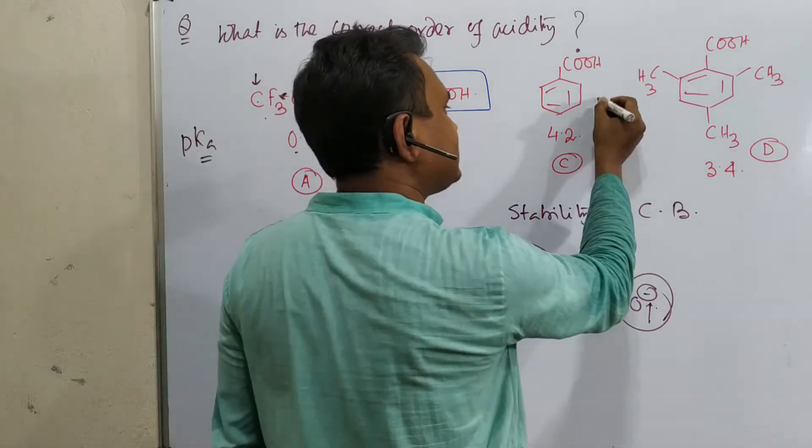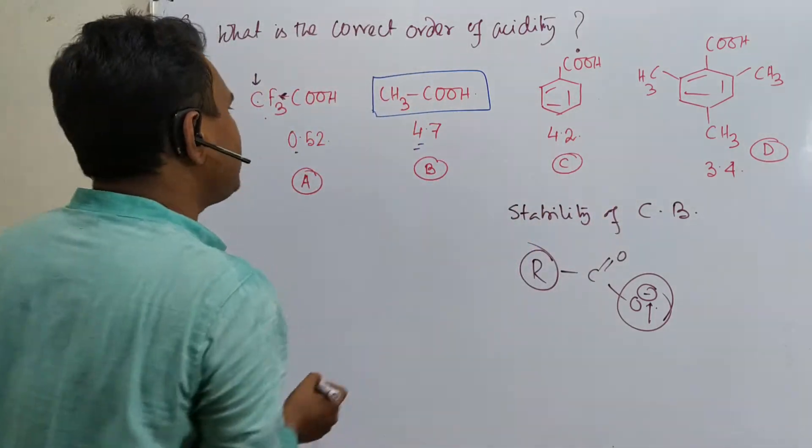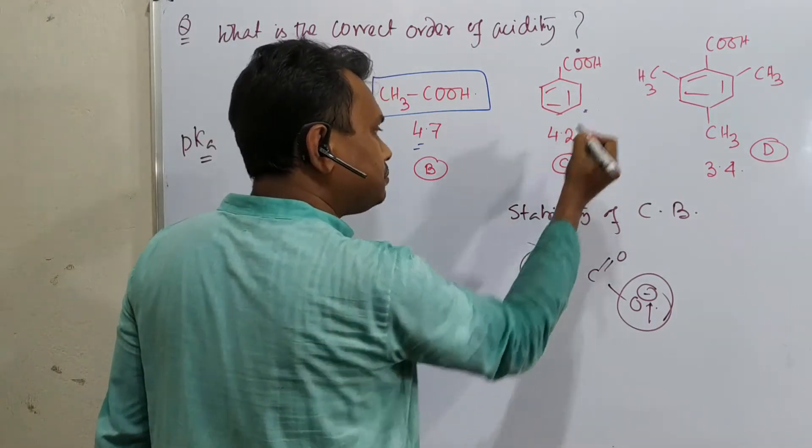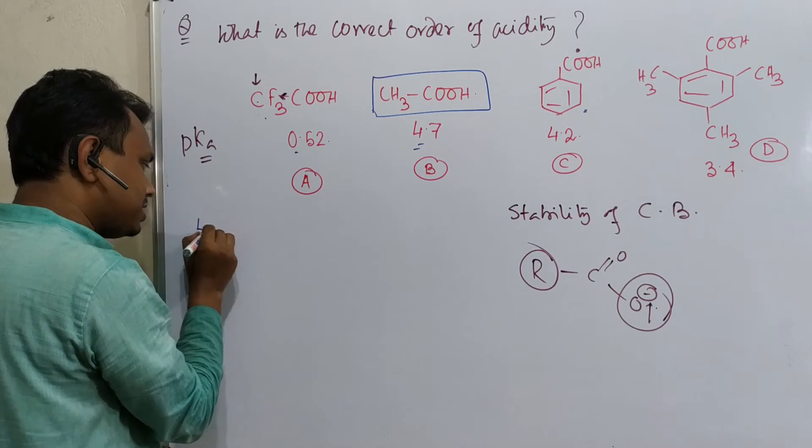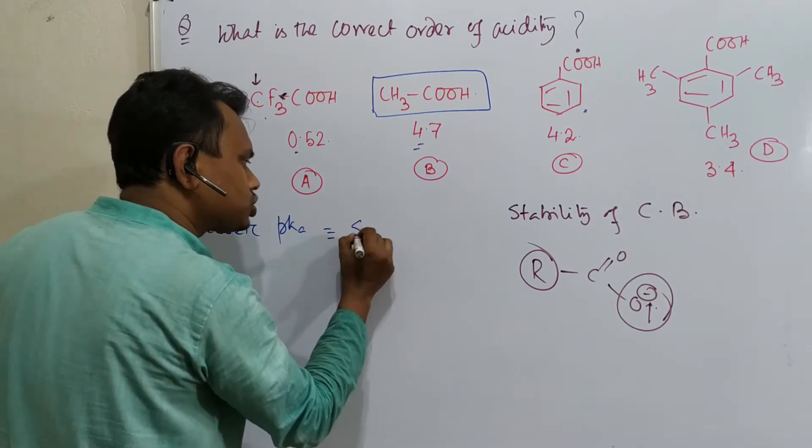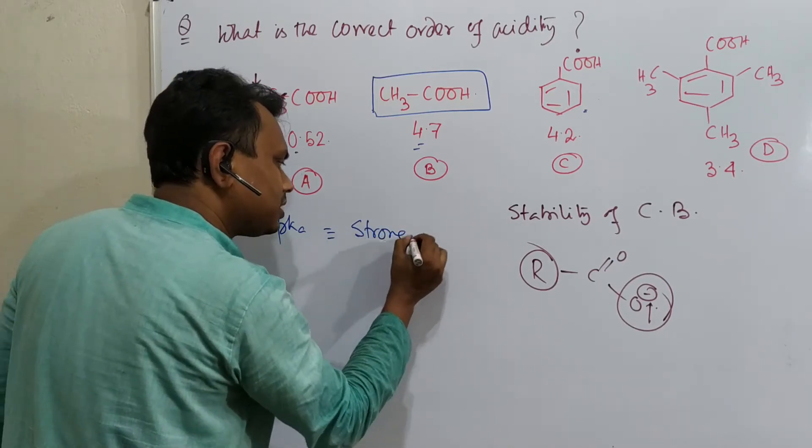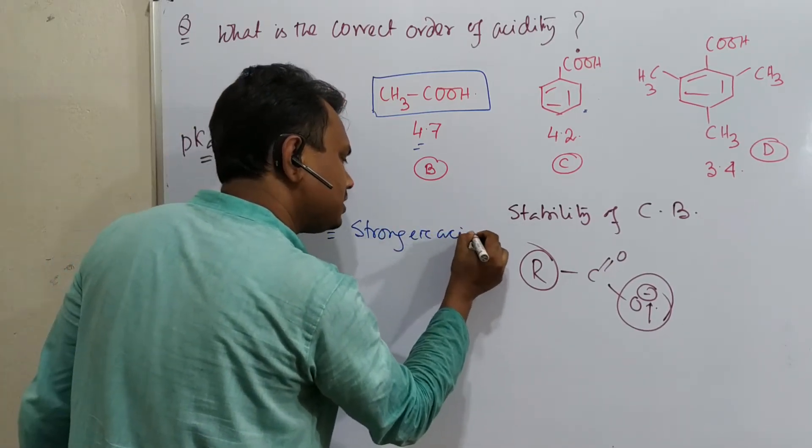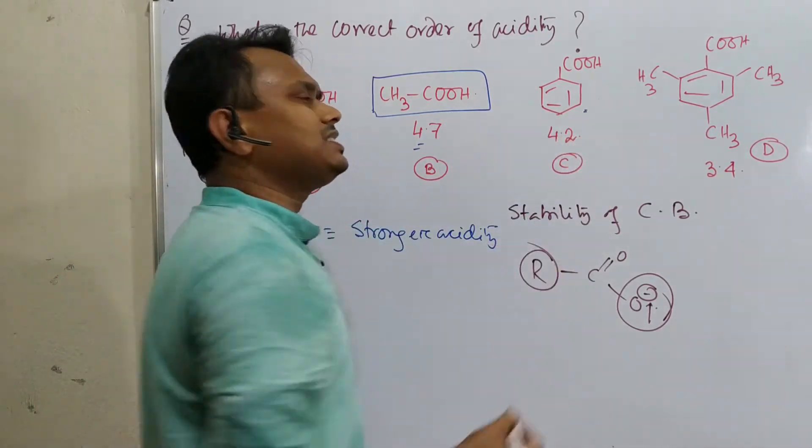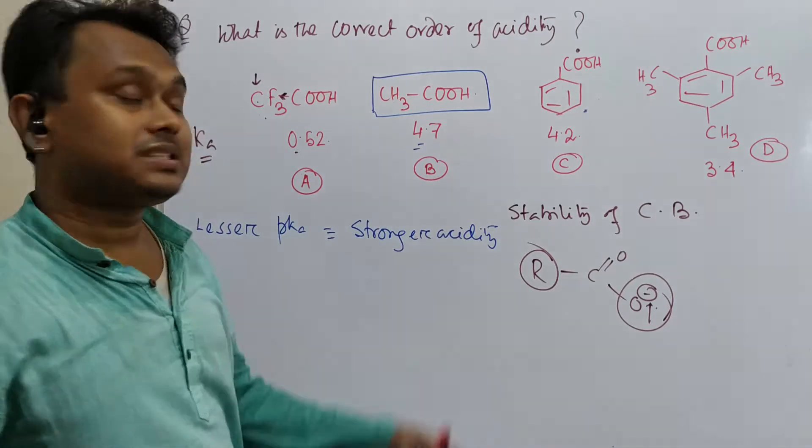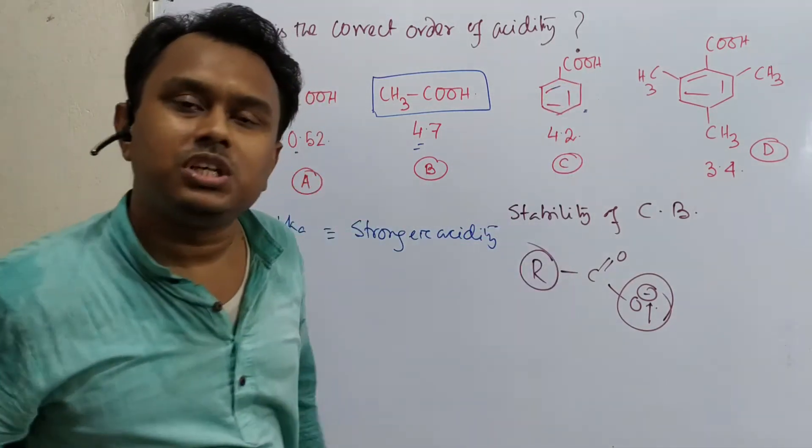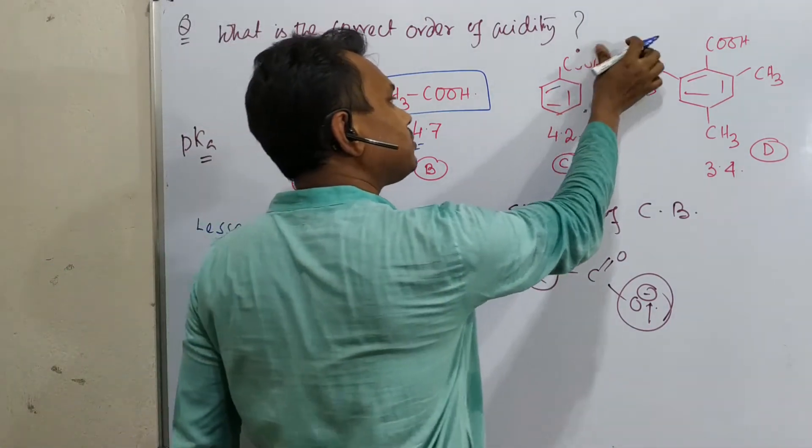Now the next thing is benzoic acid. Now question, you may think that sir, why is benzoic acid more acidic? Remember another explanation. Lesser pKa is equivalent to stronger acidity. So now question, why is benzoic acid more strong than acetic acid? Generally we consider that this pi system can give electron to the carbonyl.